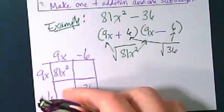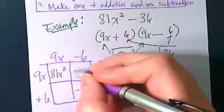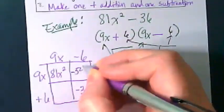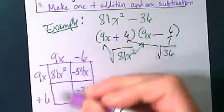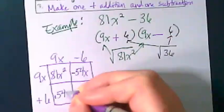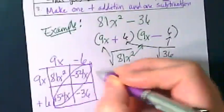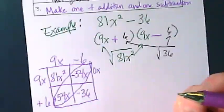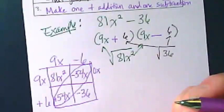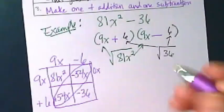Negative 6 times 9x gives us negative 54x. 9x times positive 6 gives us positive 54x. These zero each other out, so we get 0x as our combined term and can cancel them out.